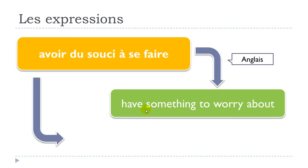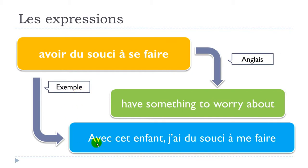Let's see one example — un exemple: 'Avec cet enfant j'ai du souci à me faire.' With this kid, j'ai du souci à me faire. And if you look quite carefully and compare it to the expression AVOIR DU SOUCI À SE FAIRE...